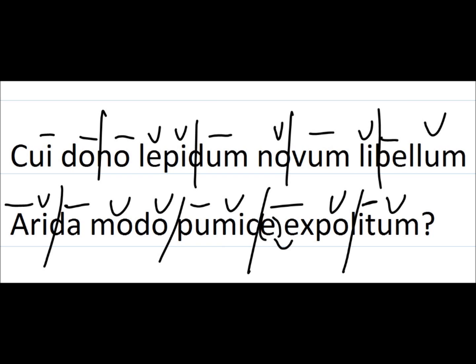For the second line, I've already finished it for you because it has an elision — I had to mark it in a different program. Again, start with long by position. Also, if you've already translated the poem and you know 'arida' is an ablative, you know that last A must be long. So you can mark that A in 'arida' if you know that. As we go through, mark long by position: 'xp' — not only is the X a double consonant on its own, but it's followed by P, making it a triple consonant. So the E in 'expolitum' is going to be long.